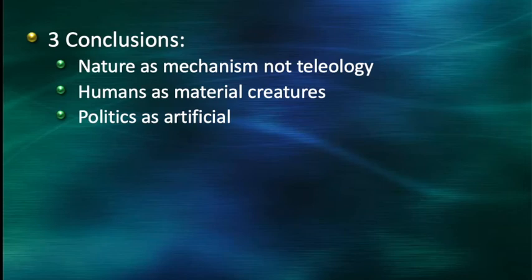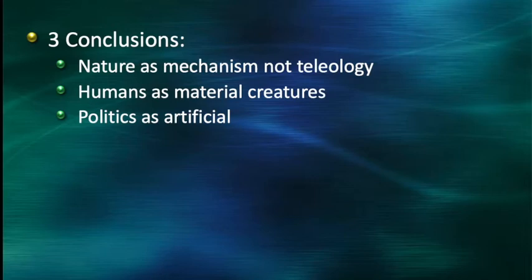So just from this introduction, we already have three really important distinctions Hobbes is drawing: first, that nature is a mechanism, not a teleological purpose-driven whole; second, that humans are material creatures, no different than other animals; and third, that politics is artificial — it's not natural, it's the work of human beings. From this basic conception, we can turn to Hobbes' account of human psychology. While we're talking about this, be thinking about how this is different from Plato's tripartite conception of the soul, Al-Farabi's discussion of the human faculties, or Aristotle's account of human virtue.